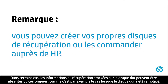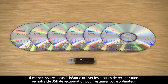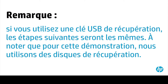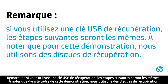In some cases, the recovery information on the hard drive may be missing or damaged, such as when a hard drive is replaced. When this happens, it is necessary to use the recovery disks or a recovery USB drive to recover your computer. If you are using a USB recovery drive, the following steps will be similar, but for this example we are using recovery disks.